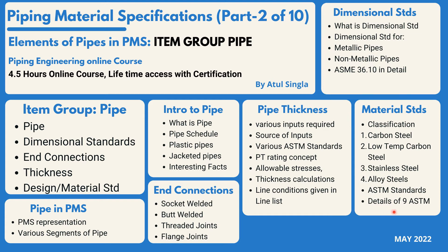The most important part is material standards, where we define the pipe group in PMS. We will classify and divide this section into four parts: carbon steel, low temperature carbon steel, stainless steel, and alloy steels. We will look into each section with respect to ASTM standards — chemical and mechanical properties — so that we understand how to refer to these and implement them in live projects.